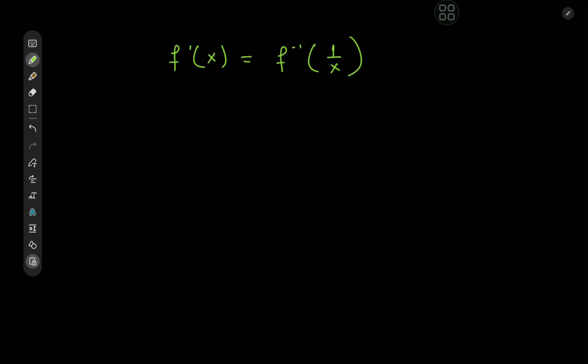We need to take a guess at the structure of the function f(x), and the equation itself provides a very nice hint. We have the derivative on the left and the inverse on the right-hand side of the equation. The derivatives of power functions are power functions, and the inverses of power functions are also power functions. So we study f(x) = α·x^β, where α and β may both be complex numbers.